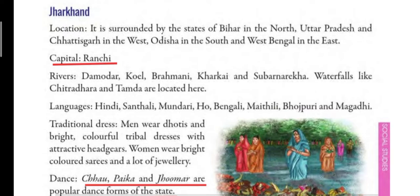Jharkhand lies on the central highlands, specifically on the Chhota Nagpur Plateau. The capital of Jharkhand is Ranchi, where we all are living, and the rivers which are flowing here are Damodar, Koyal, Brahmani, Karkai, and Subarnekha.